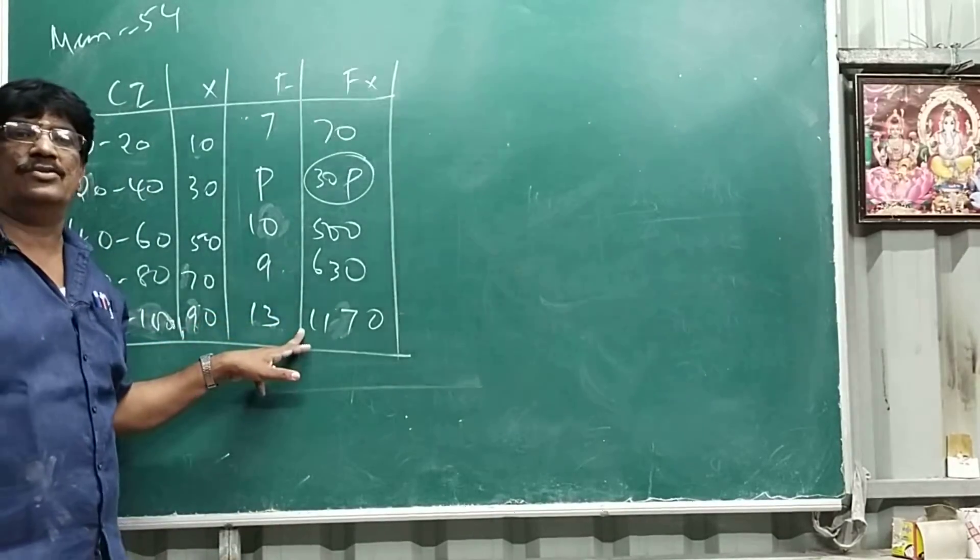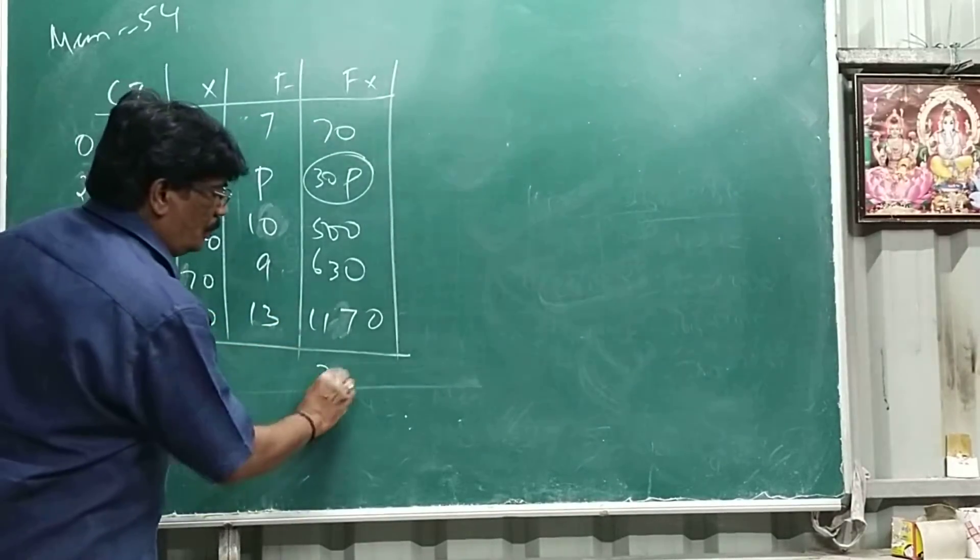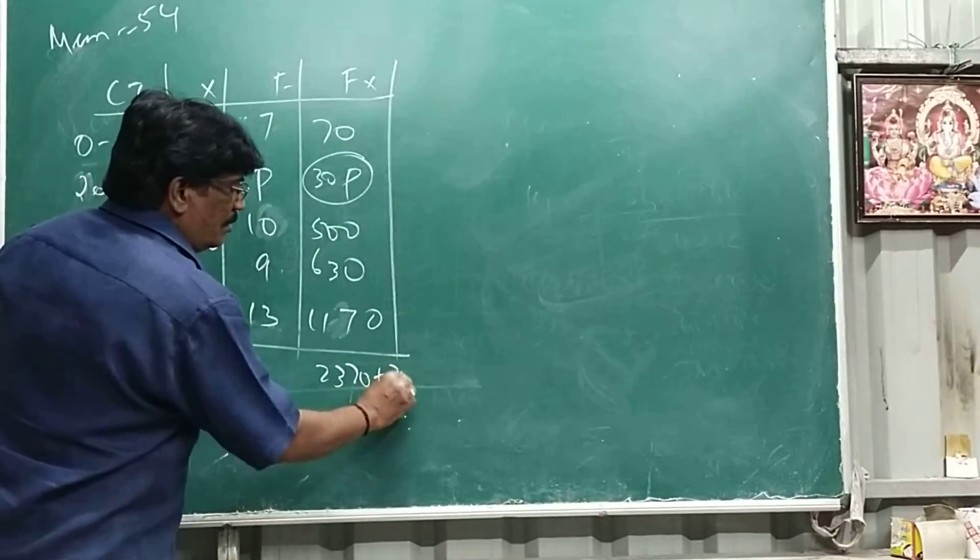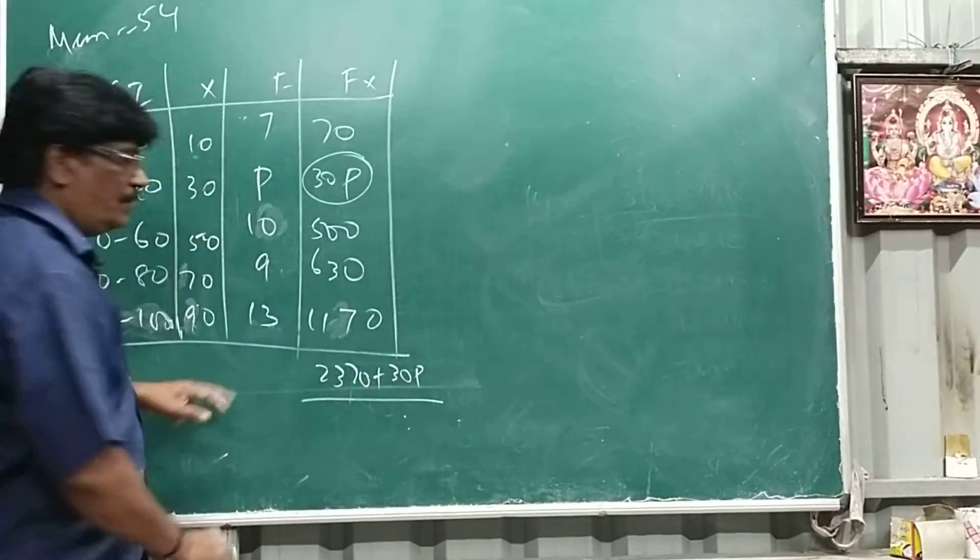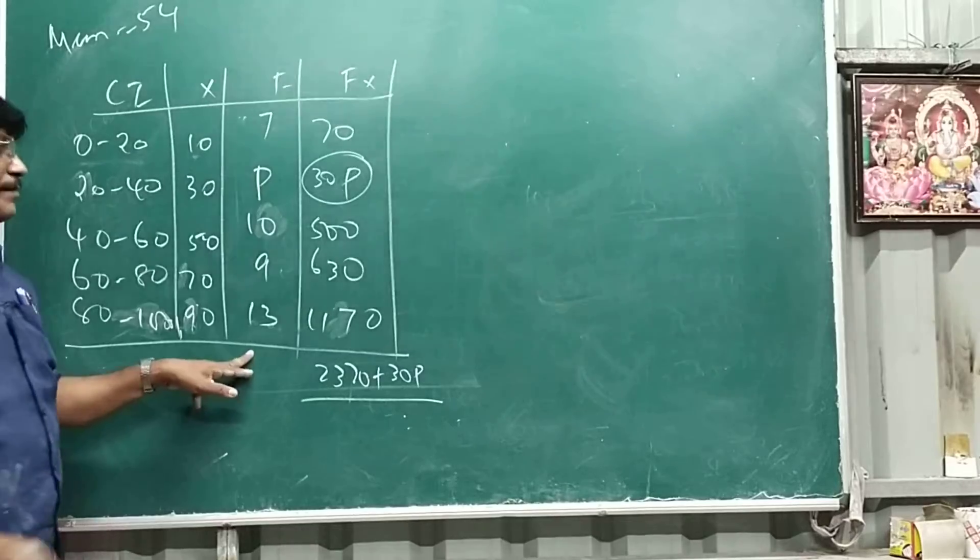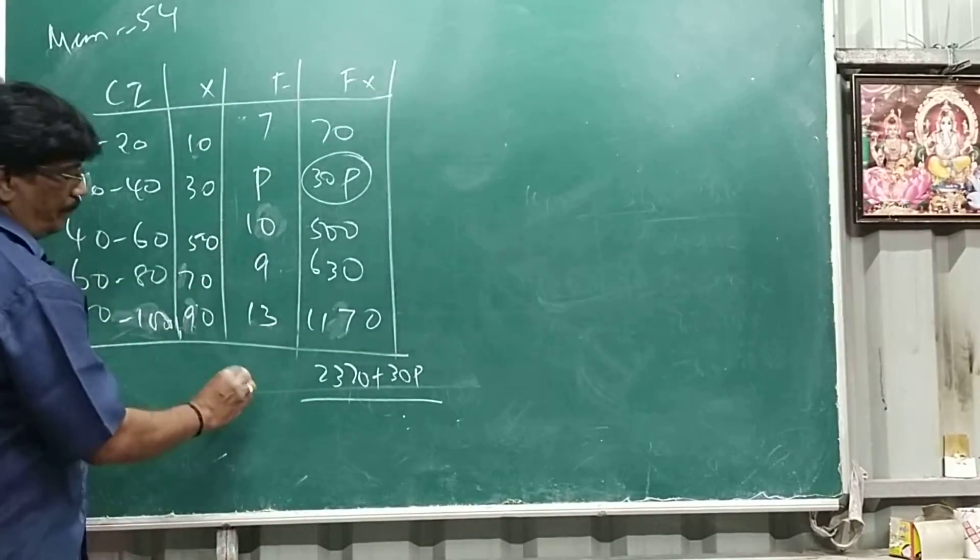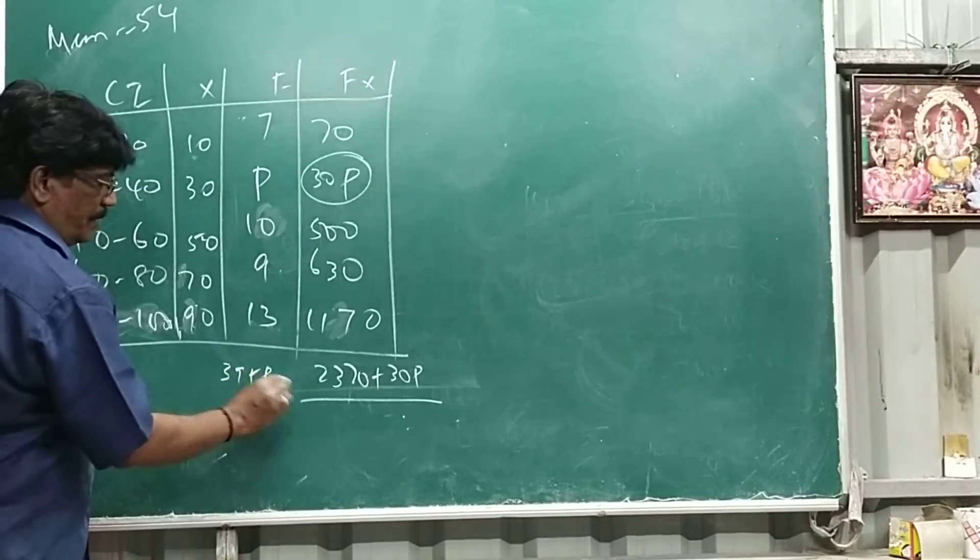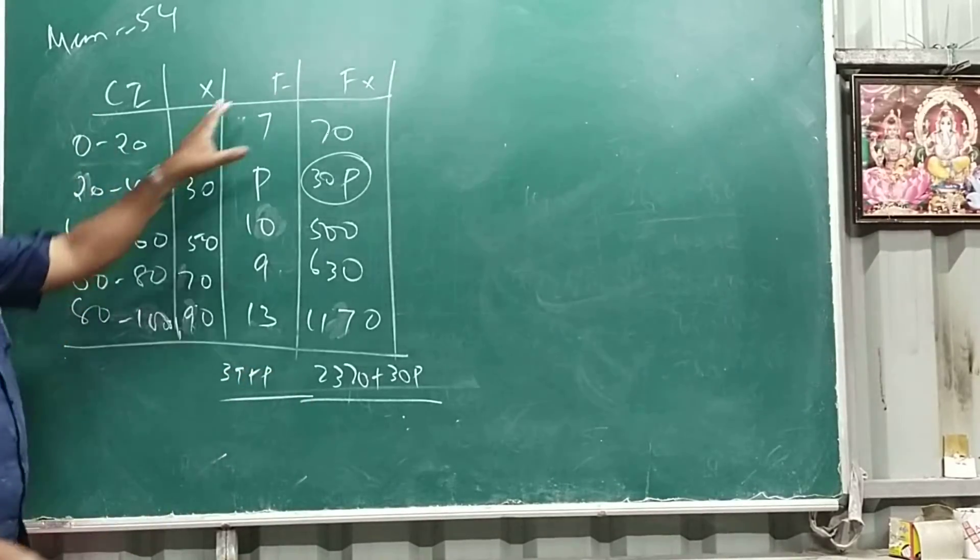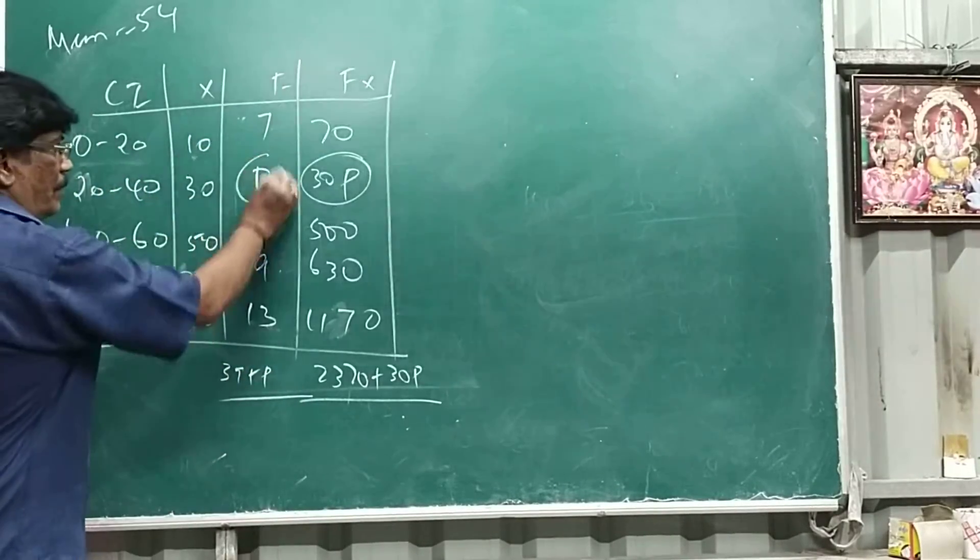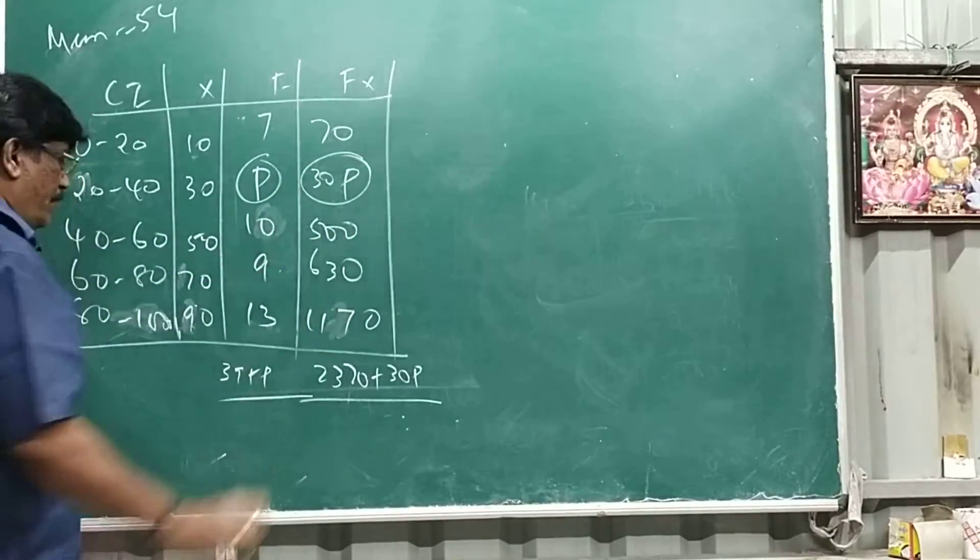Okay, now when adding this 2370, 2370 plus 30p for this one, this one adding is 39 plus p. So add this number, p separately keep, add the numbers alone, 30p separately keep.